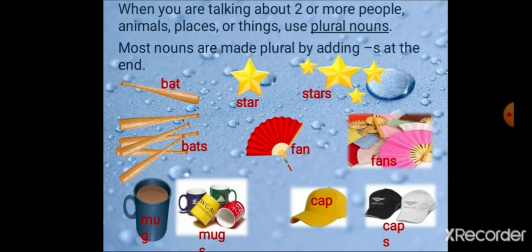When you are talking about two or more people, animals, places, or things, use a plural noun. Most nouns are made plural by adding 's' at the end. For example: mug becomes mugs, fan becomes fans, cap becomes caps. By this way, we can change a singular noun into a plural noun.